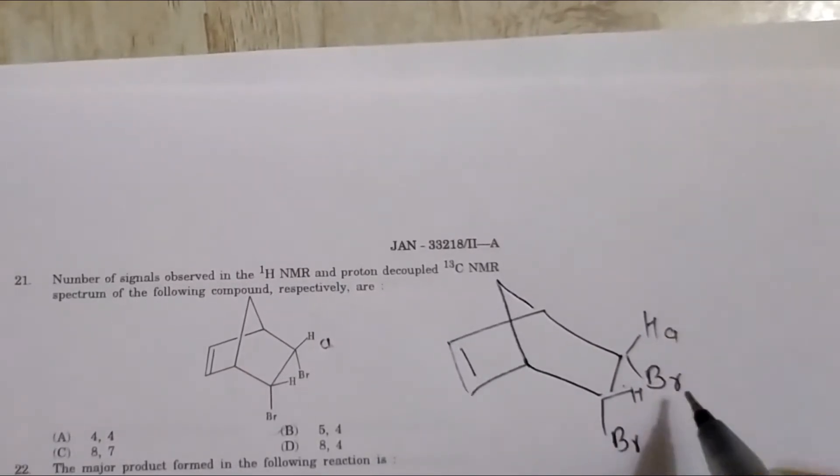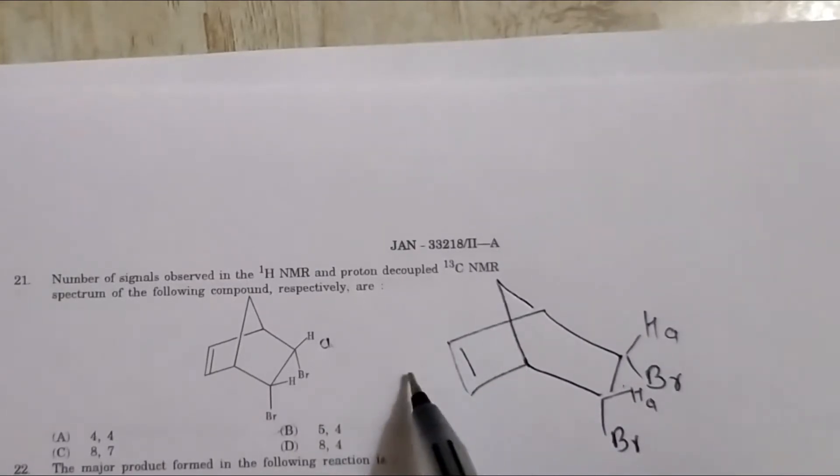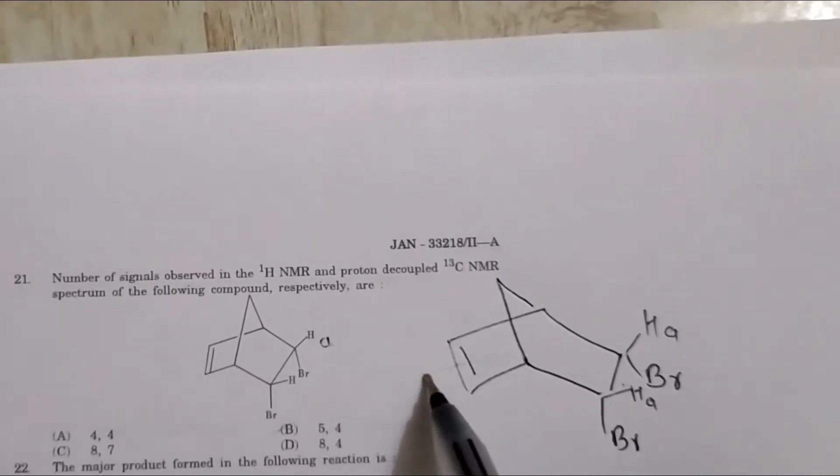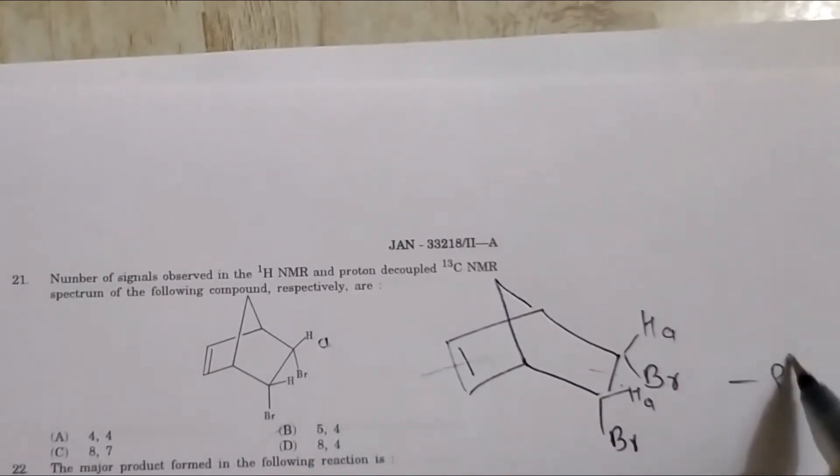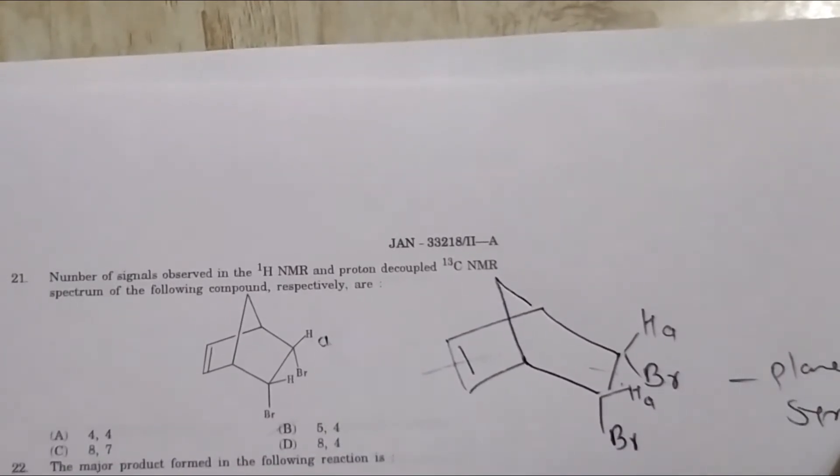See, this is HA and this is also HA, because here the plane of symmetry is there. See, this it cuts, this carbon it cuts, and this - here the plane of symmetry is present.